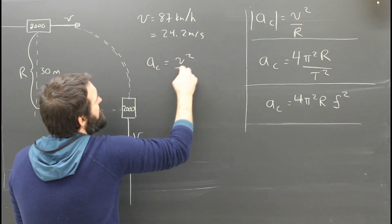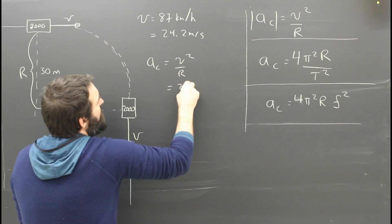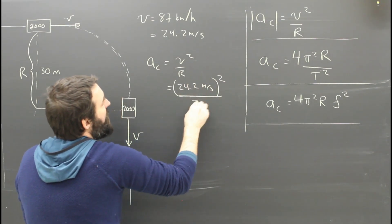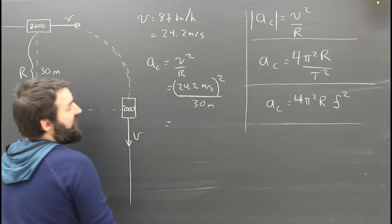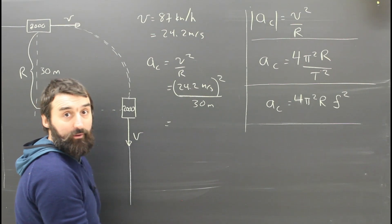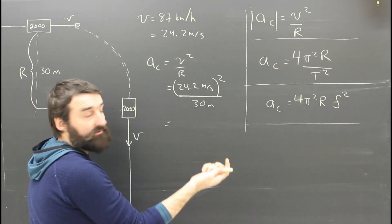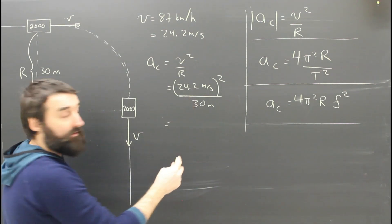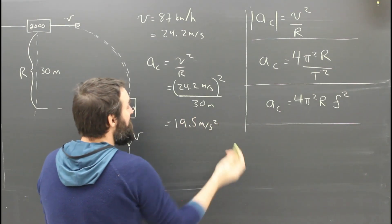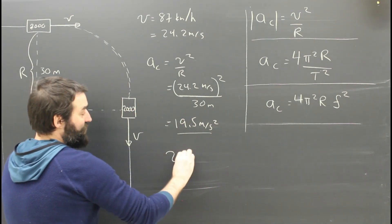AC equals V squared over R. That's 24.2 meters per second, all squared, divided by 30 meters. Check out my units. One meter will cancel. I'll end up with meters per second squared, which is really good because it's an acceleration. What do I end up with there? 19.5 meters per second squared, which is a lot. It's almost two Gs.